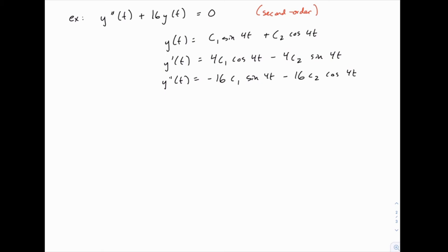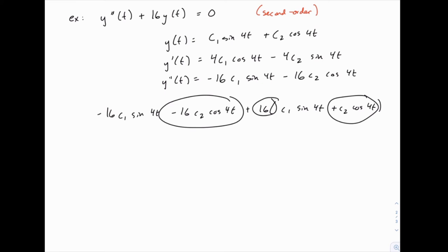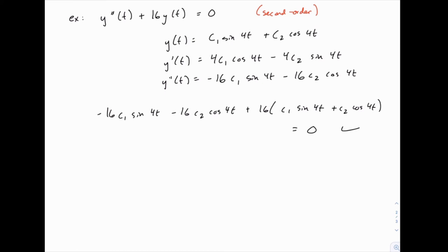When we plug all this into the differential equation, we have negative 16c1 sine of 4t for y double prime, plus 16 times y. The negative 16c1 sine cancels with the positive 16c1 sine, and the negative 16c2 cosine cancels with the positive 16c2 cosine. So it equals zero, and we've confirmed this solution. If it hadn't equaled zero, the proposed solution would be wrong — but this example shows one where it is correct.